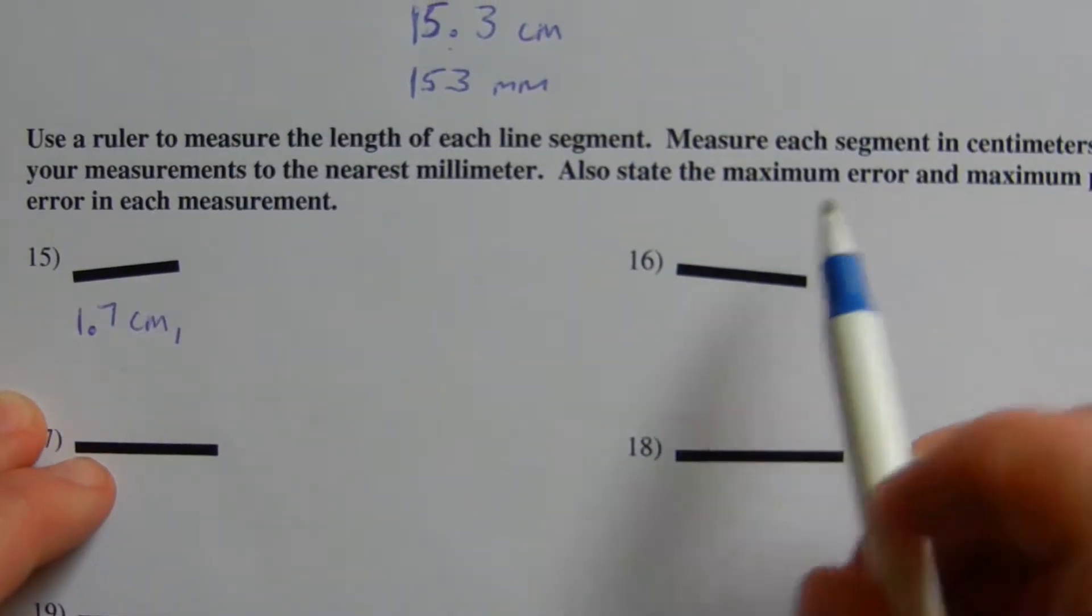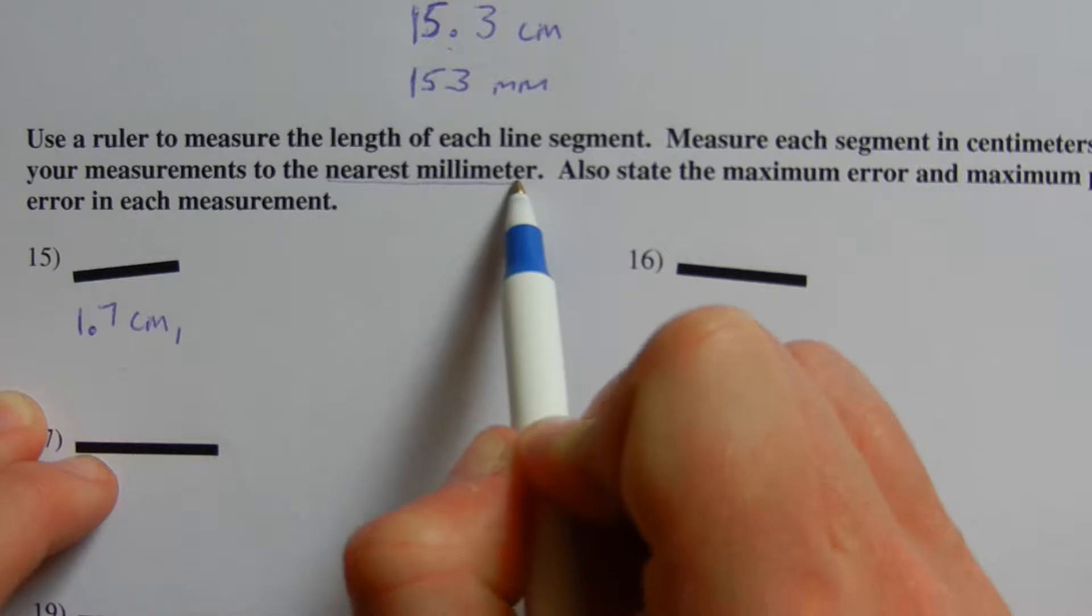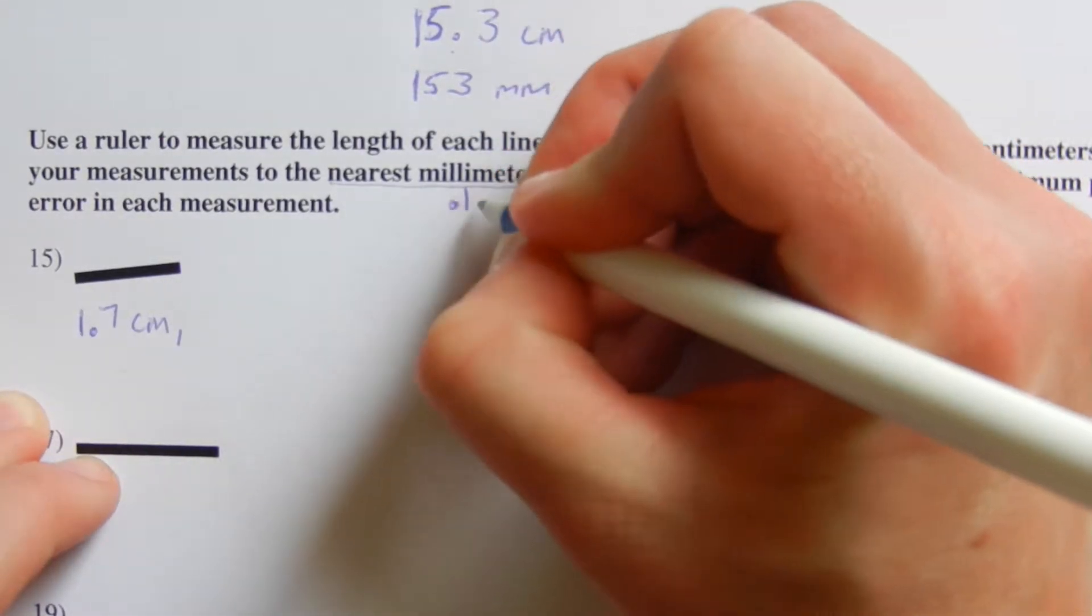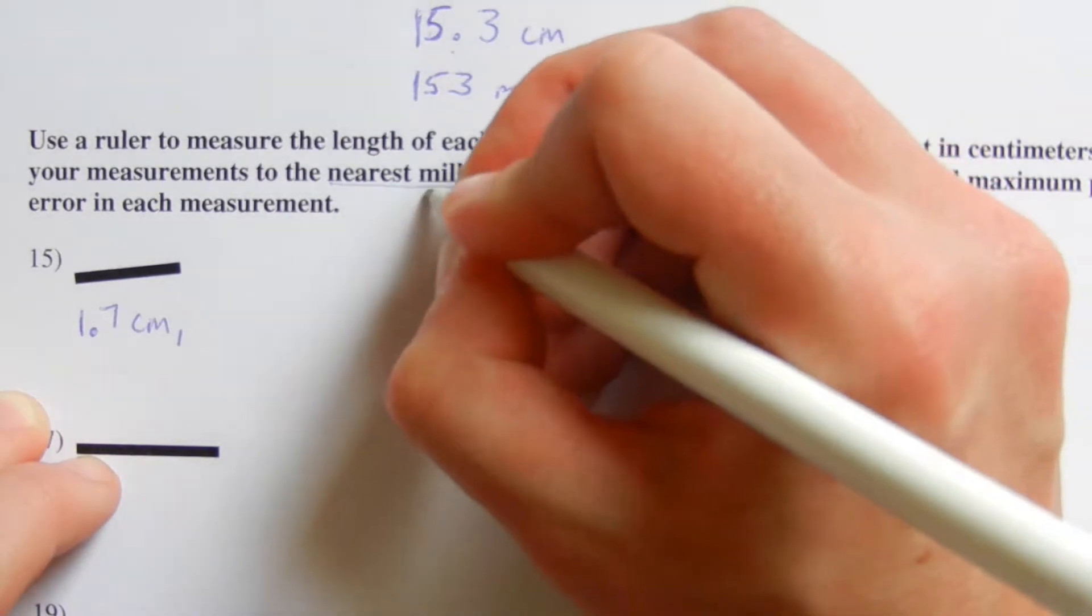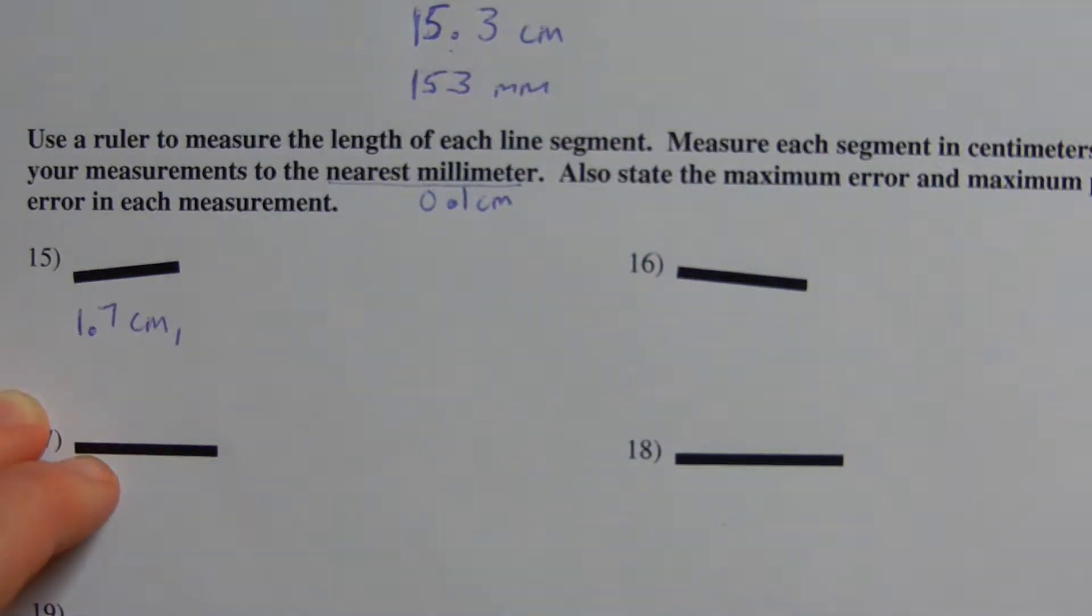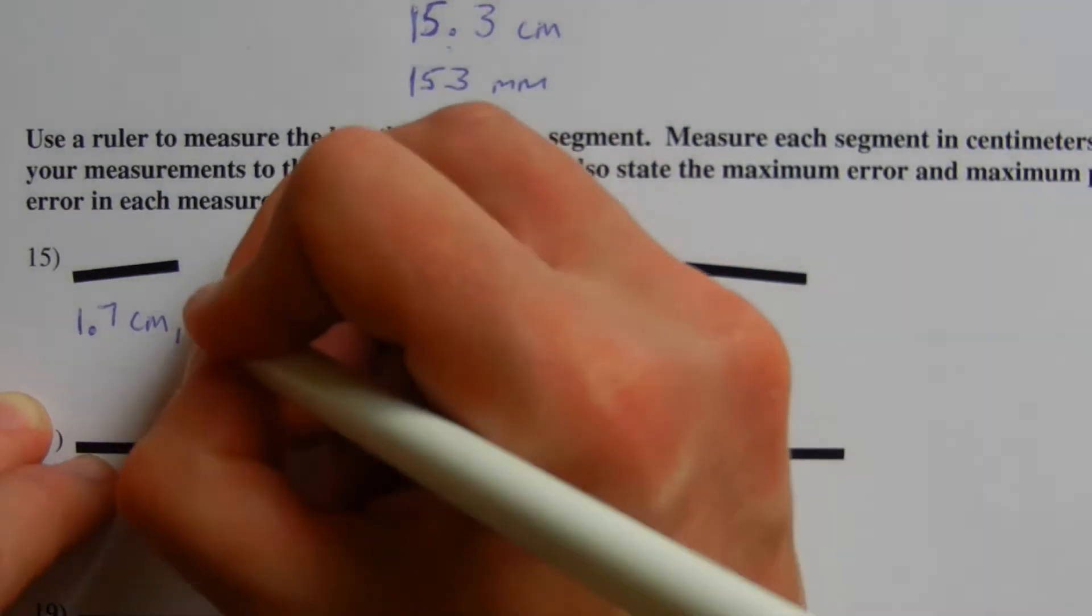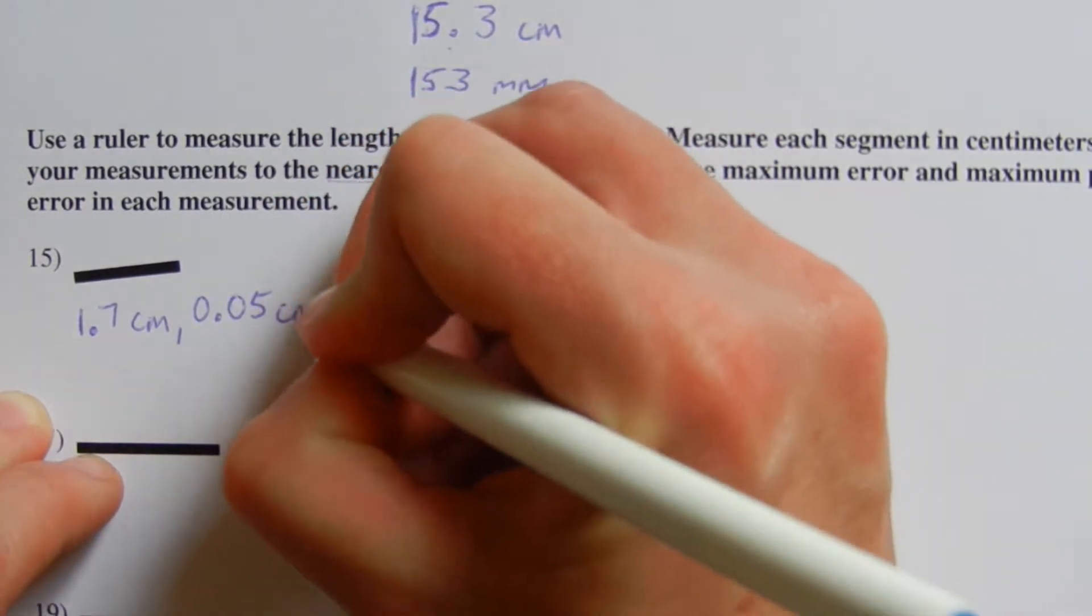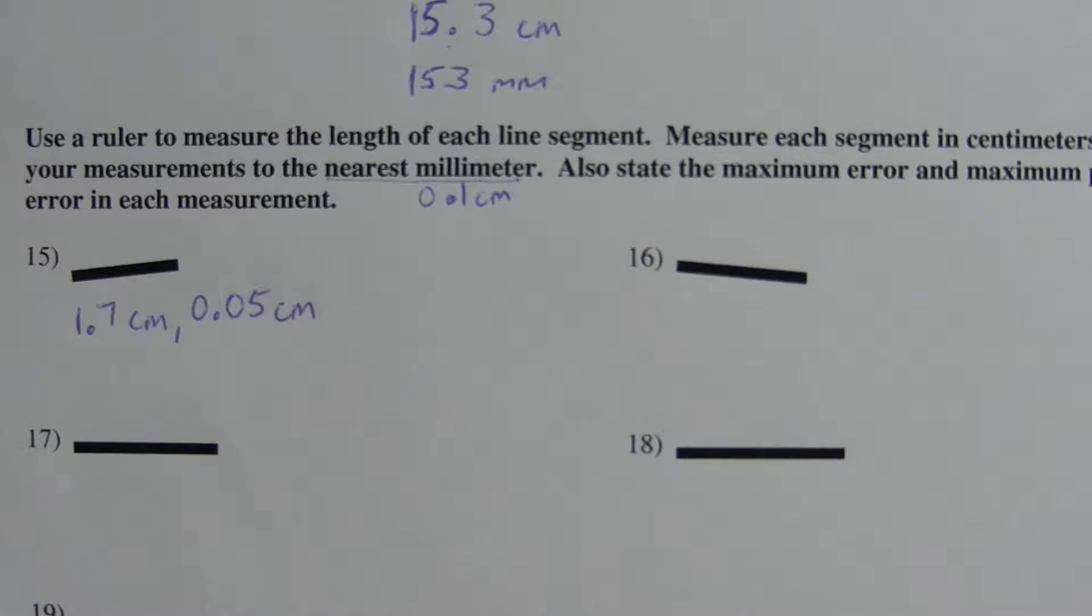Now our maximum error, since we're measuring to the nearest millimeter and a millimeter is one-tenth of our centimeter. If we divide that by two, we would get our maximum error. So this is 0.05 centimeters. That's our maximum error.